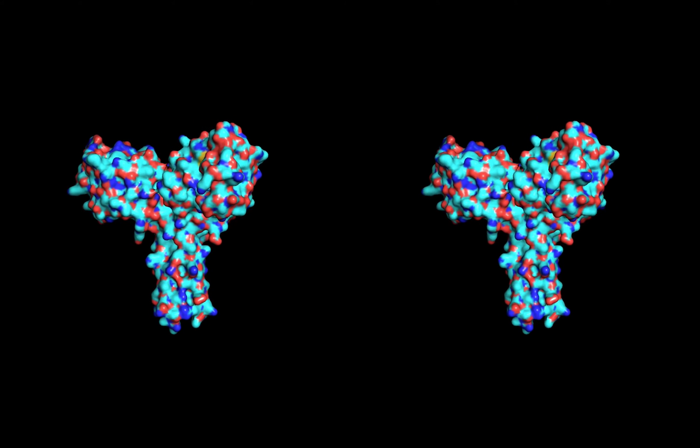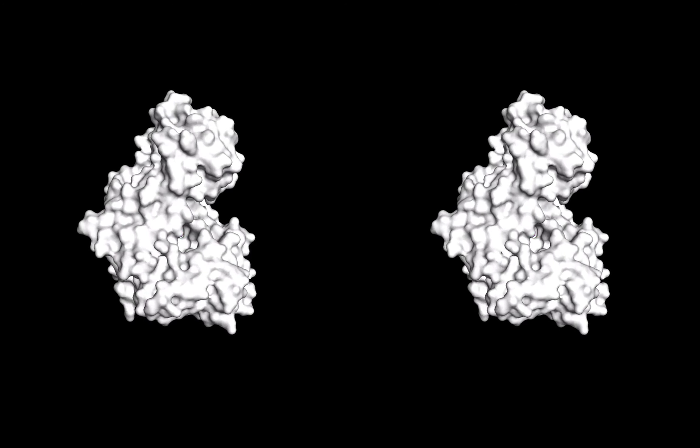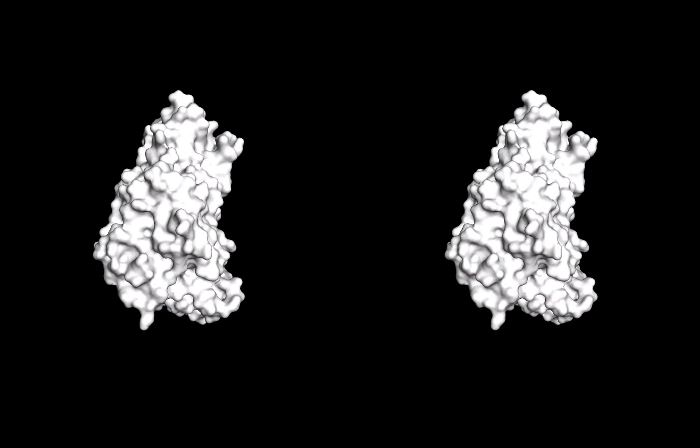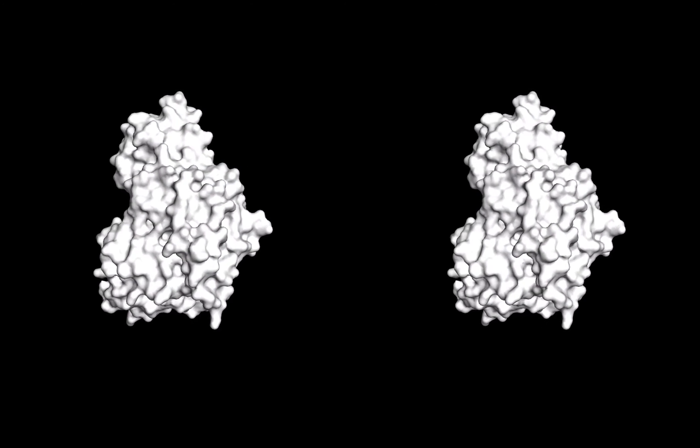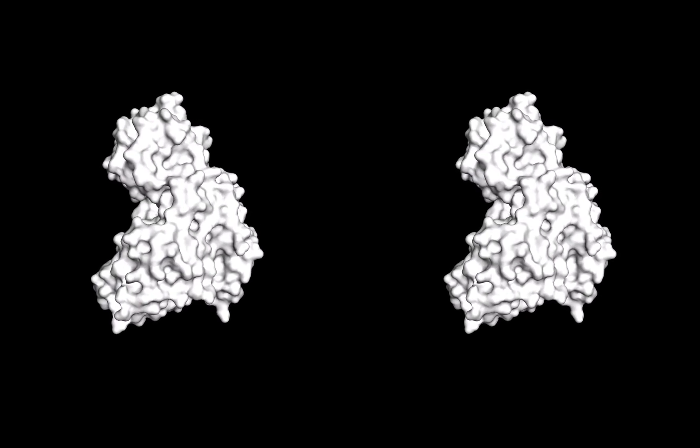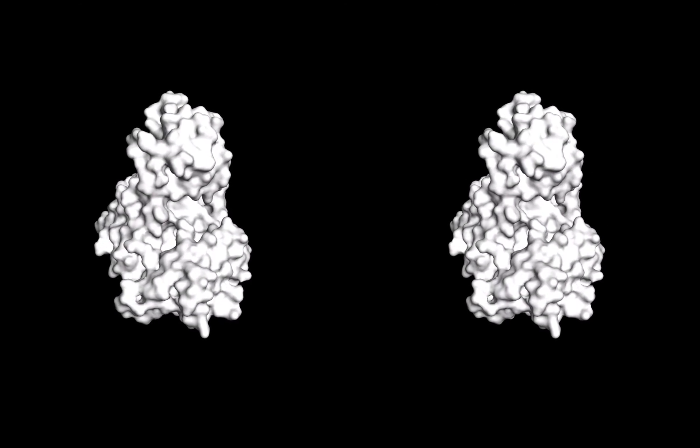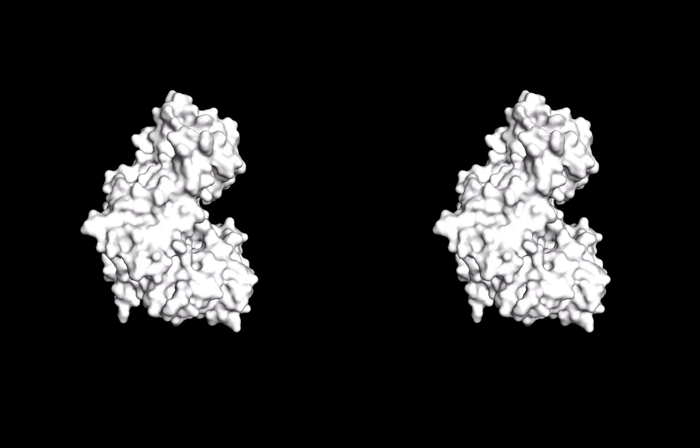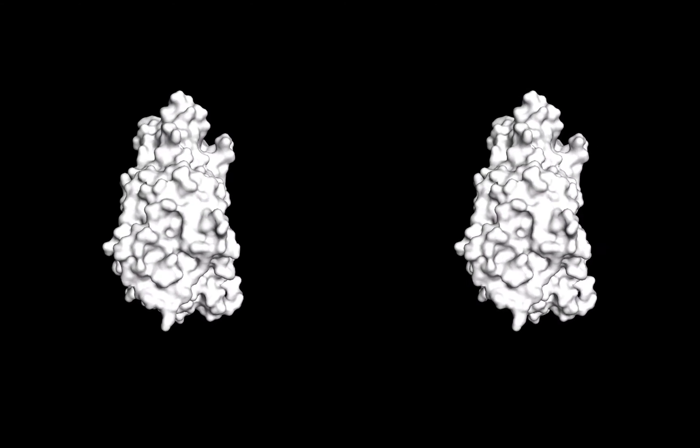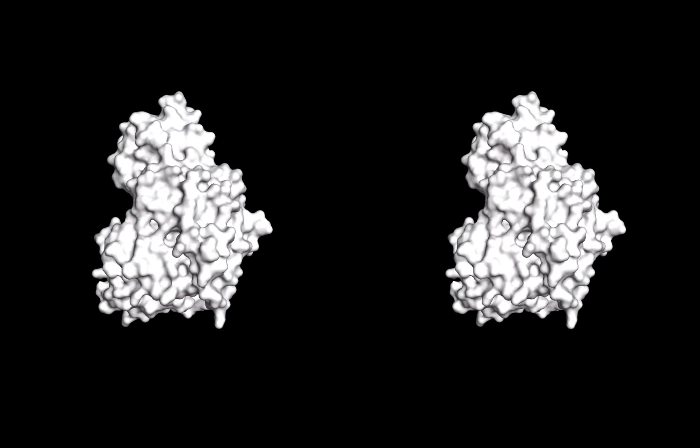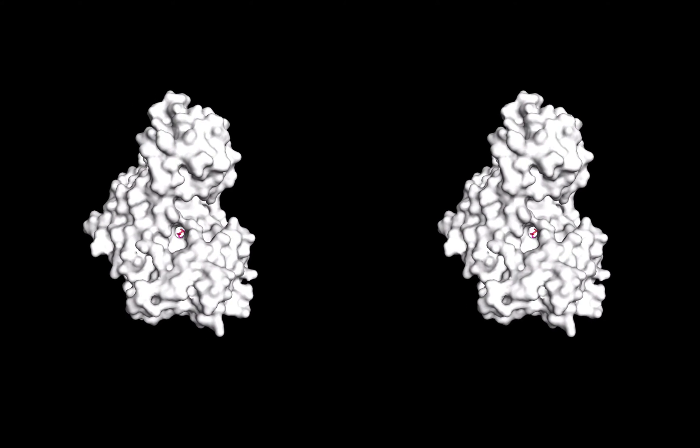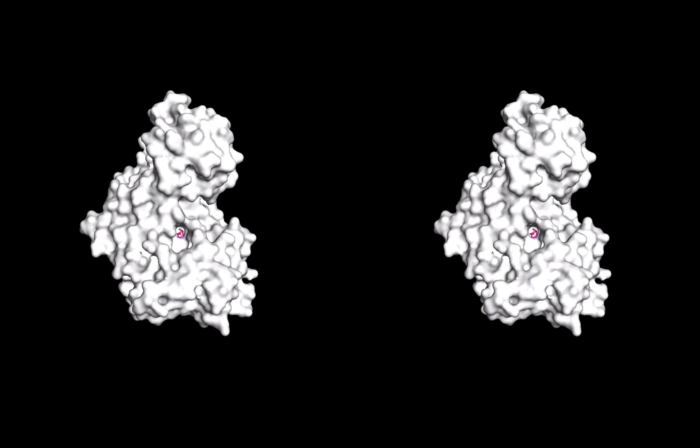Let's look at an enzyme in the surface view. Here we're looking at hexokinase, the first enzyme involved in the process of breaking down sugar in your body. Because this is an enzyme, it catalyzes a chemical reaction in a region of the protein called the active site. And this one does so in a deep cleft on the enzyme. Can you spot the active site?